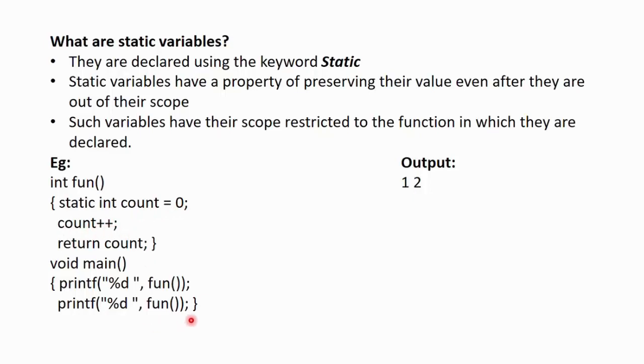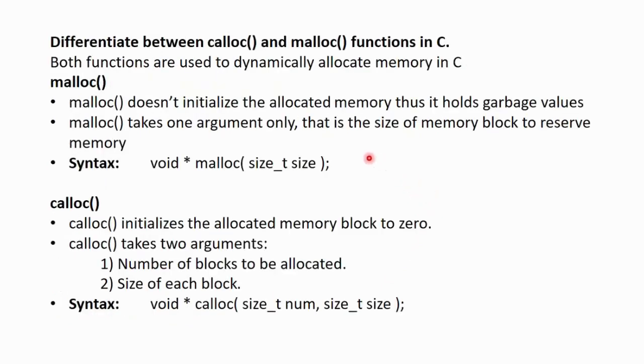Now, this 2 will be printed using this print statement over here. So, the output we get is 1 and 2. Next question, differentiate between Calloc and malloc functions in C. As we know that both these functions are used to dynamically allocate the memory in C programming language. What is the difference between them?